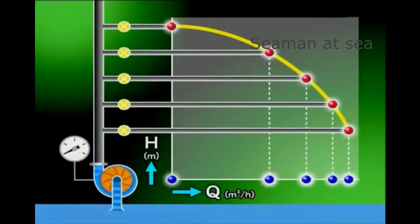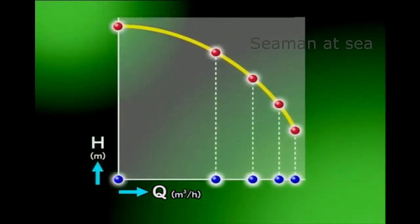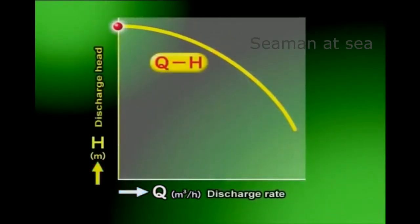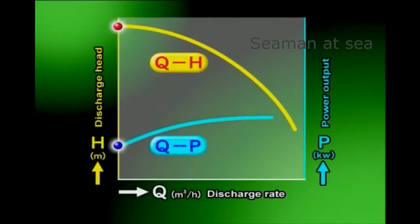Pump output refers to an amount of work with which a pump pushes up a certain discharge amount of water to a certain pump head. The relation between the pump output P and discharge amount Q also shows the pump's performance capability.